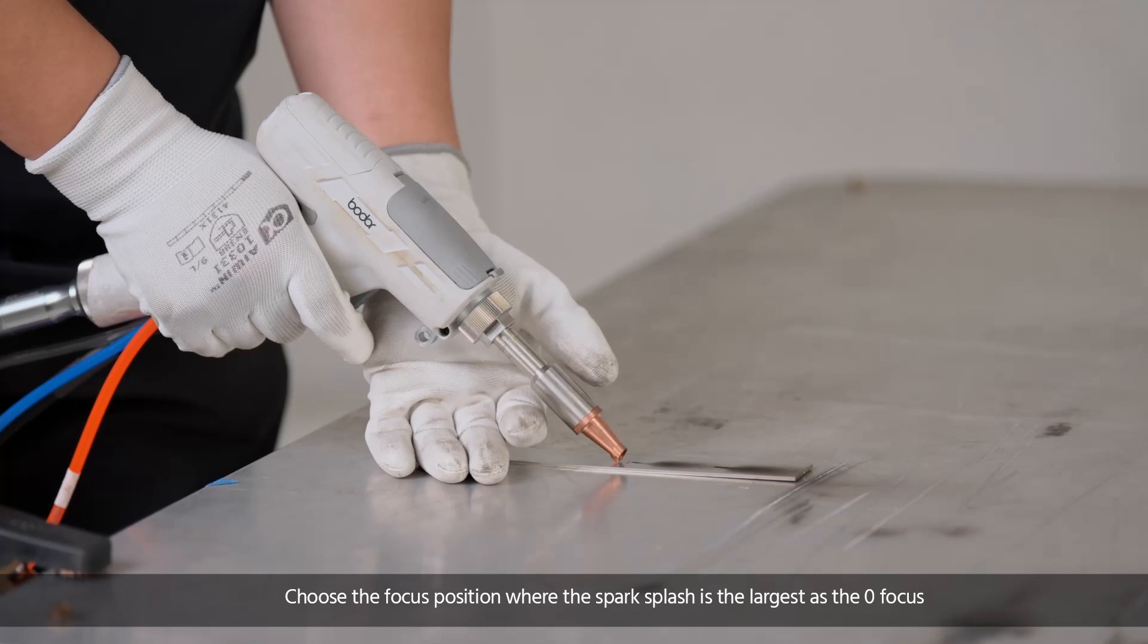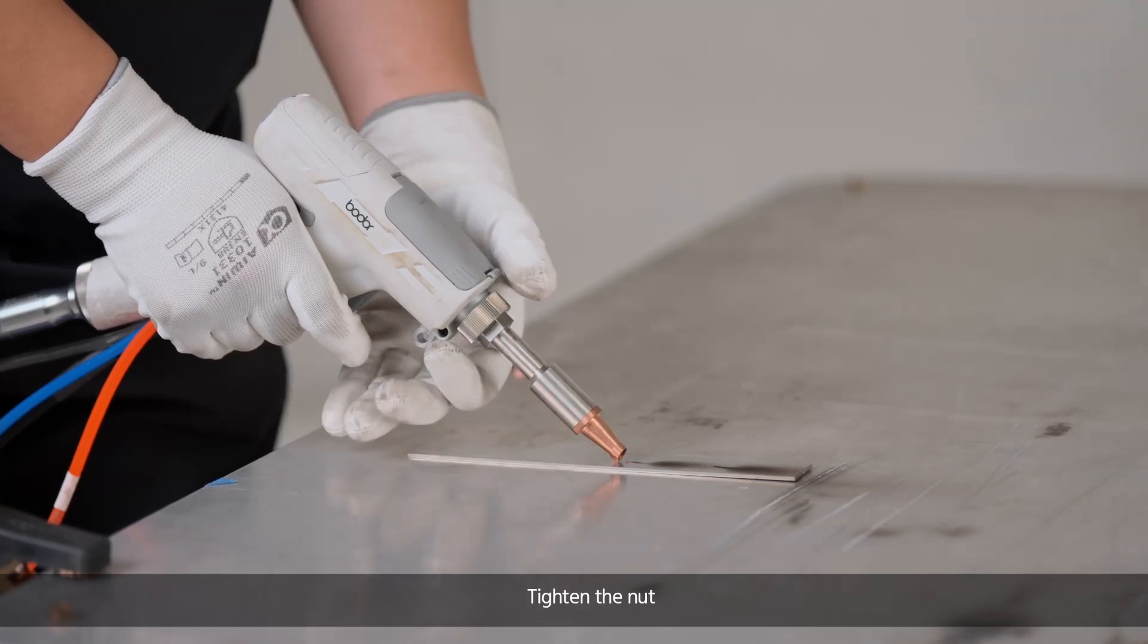Choose the focus position where the spark splash is the largest as the zero focus, which is also the welding focus. Tighten the nut.